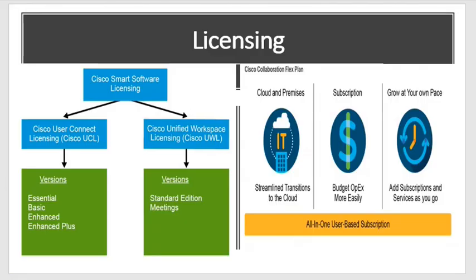Next, about licensing — you just need to know a brief overview of what licensing is. We have different types of licensing for different products and services in collaboration. There are two main types of smart licensing services: the first is UCL, which is User Connect Licensing, and the second is UWL, which is Workspace Licensing.